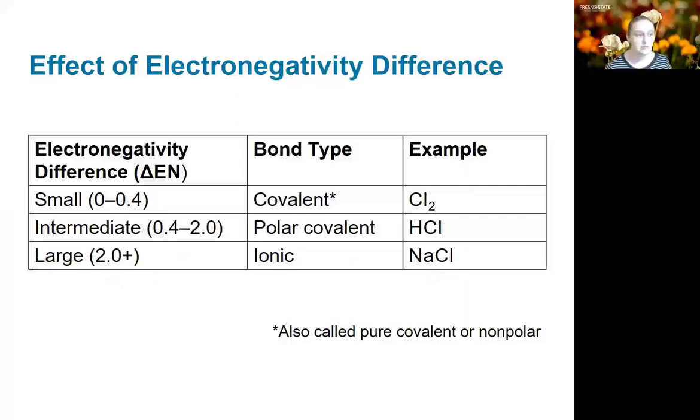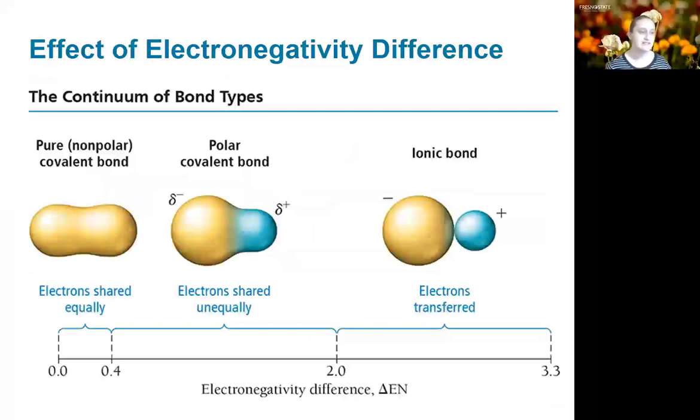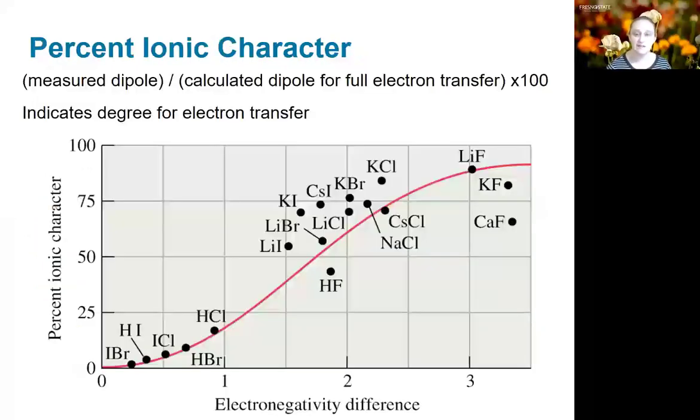Really we have a continuum of differences in electronegativity. We go all the way from nonpolar, where the electrons are completely shared equally, to ionic, where one electron is completely transferred to the next atom. Another way of talking about this, in addition to just the electronegativity difference, is the percent ionic character. This is basically just a difference in measuring the dipole compared to what it would be if that electron was fully transferred. It indicates the degree of electron transfer.